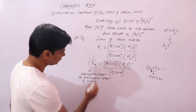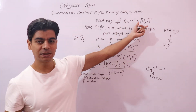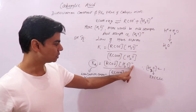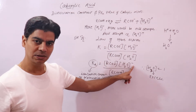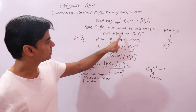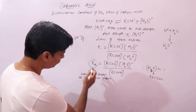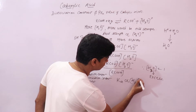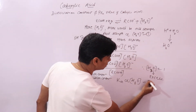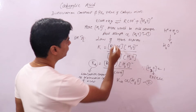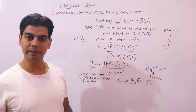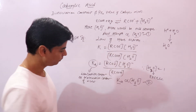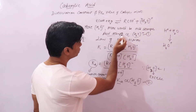Since acid strength is directly proportional to hydronium ion concentration, and Ka is also directly proportional to hydronium ion concentration from this relation, it follows that Ka is directly proportional to acid strength. More is the acid strength, more is the hydronium ion concentration, and more would be the value of Ka.